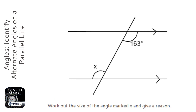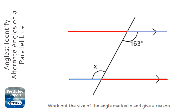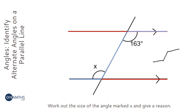We have a pair of parallel lines and a line going through them. The two angles we have form a kind of Z shape — if we highlight it, it kind of looks like that. It could also look like that depending on which angles you've got.